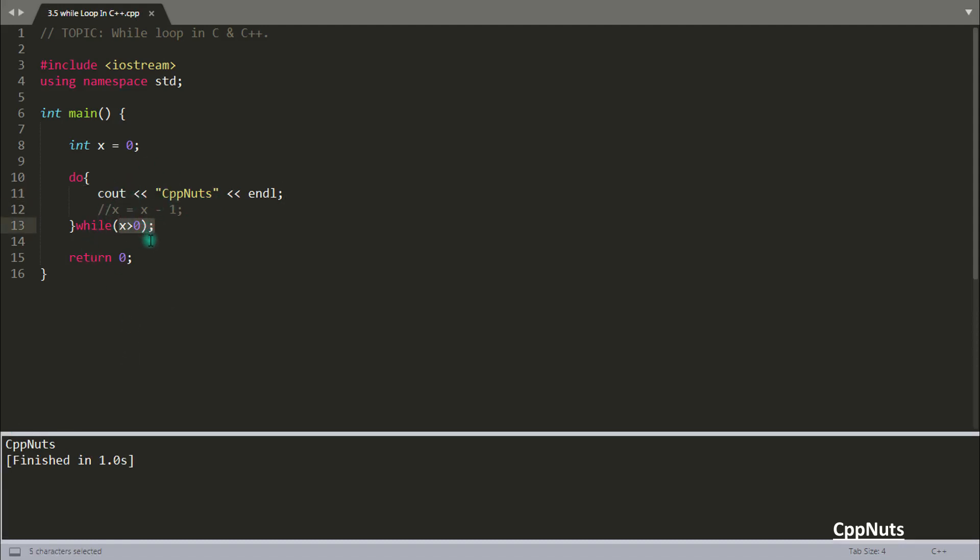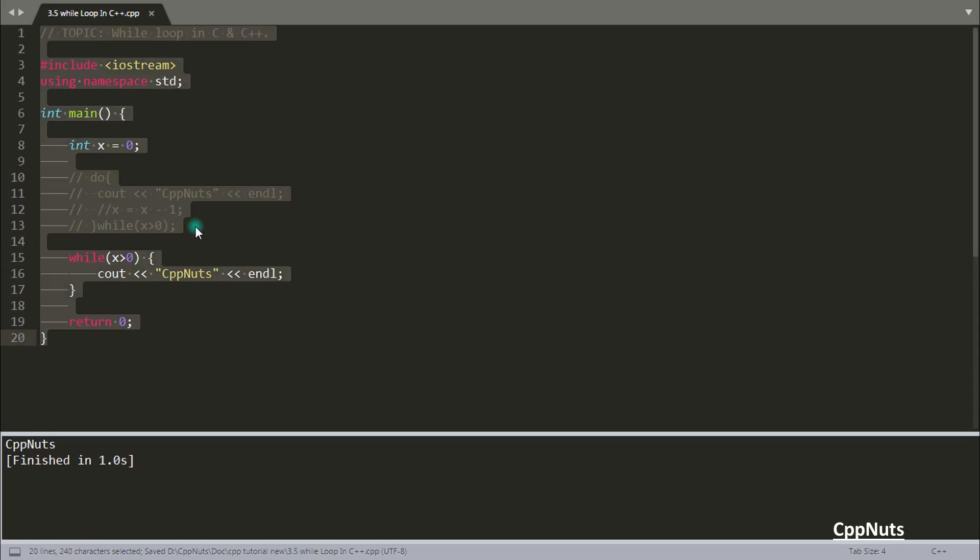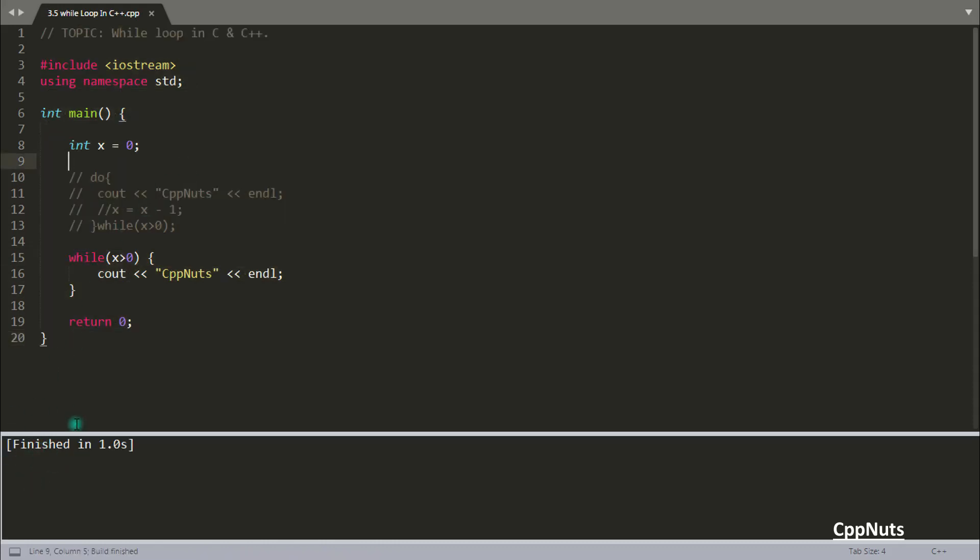Instead of this, if we are using while loop like this and x is greater than 0 checked and we are supposed to print the same message cpp nuts, then it will not print this. So let's comment out this whole thing and we will just run this one. Let's compile and see, your finished message is coming but nothing is printed.